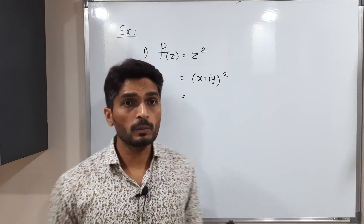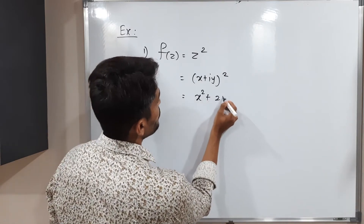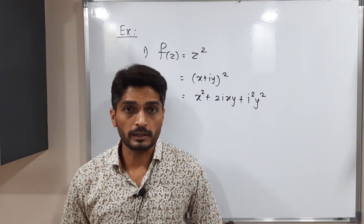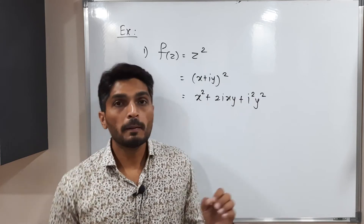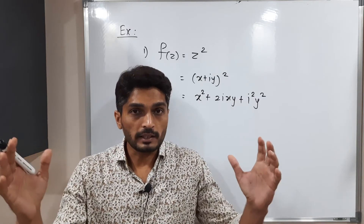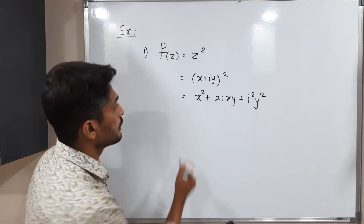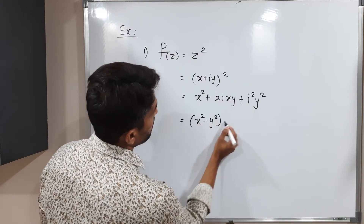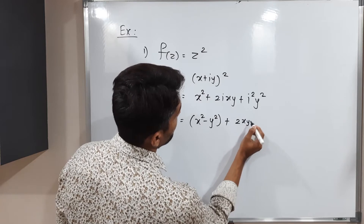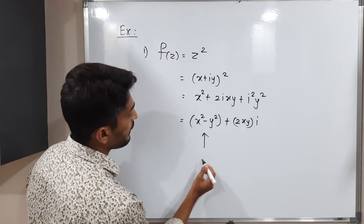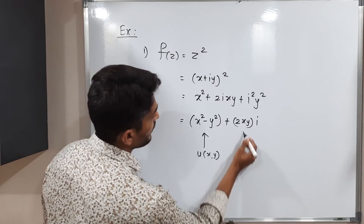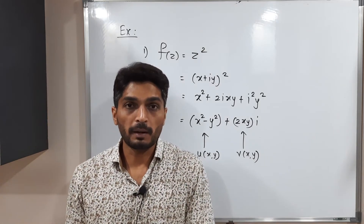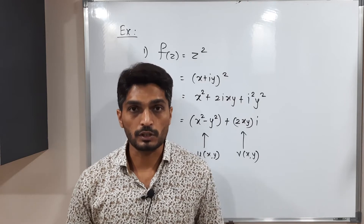Using the formula (a + b)² = a² + 2ab + b², we get x² + 2ixy + i²y². Since i² = −1, this becomes x² − y² + 2xy·i. Collecting real and imaginary parts: the real part is x² − y², which we denote as u(x,y), and the imaginary part is 2xy, which we denote as v(x,y). In this way we find the real and imaginary parts of a given complex valued function.